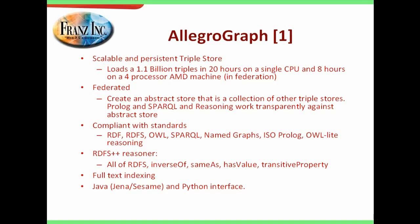We are compliant with all the standards so we don't lock you in. We do RDF, RDFS, OWL, SPARQL, Named Graphs, ISO Prolog, OWL-lite reasoning. We have one proprietary thing which is this RDFS++ reasoner which is not a full OWL reasoner but a subset. So we do everything in RDFS and then all things like inverseOf, sameAs, hasValue, transitiveProperty - it might be proprietary that both Oracle and Ontotext are basically having the same reasoners. I guess that in the near future there will be some kind of standard for the slightly more restricted OWL reasoning. And then we do full text indexing and we have Java and Python interfaces to the triple store.